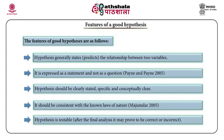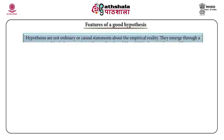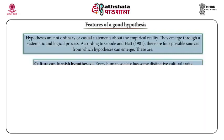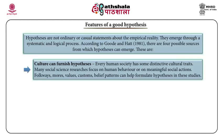I will now talk about the sources of hypothesis. Hypotheses are not ordinary or casual statements about empirical reality; they emerge through a systematic and logical process. According to Goode and Hatt, there are four possible sources from which hypotheses can emerge. First, culture can furnish hypotheses. Every human society has distinctive cultural traits, and many social science researches focus on human behavior or meaningful social actions. Folkways, mores, values, customs, and belief patterns can help formulate hypotheses.